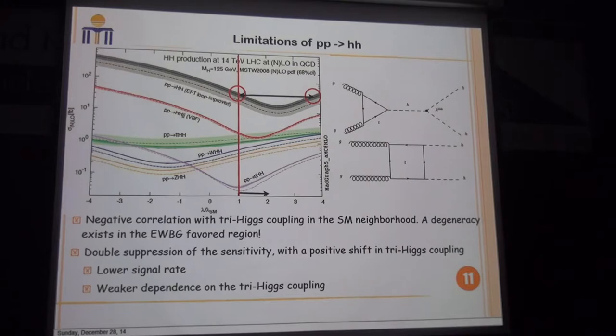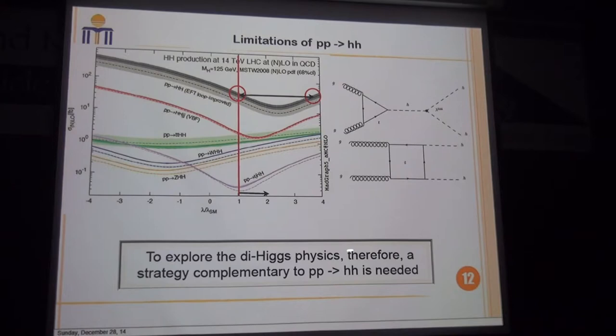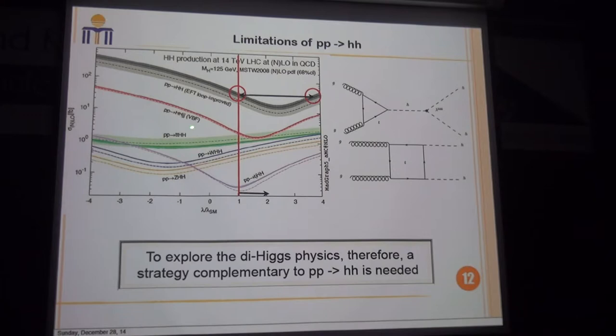Therefore, to explore the dynamics of baryogenesis physics, a strategy complementary to PP→HH is needed. If we check the di-Higgs productions in this plot, we may say PP→ttHH potentially can fill such a role, and this is indeed true. Next, I will show that it does play such a role.